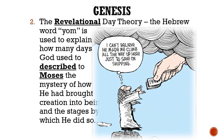The second theory is known as the revelational day theory. This theory believes that the Hebrew word yom is used to explain how many days God used to describe to Moses the mystery of how he had brought creation into being, and the stages by which he did so.